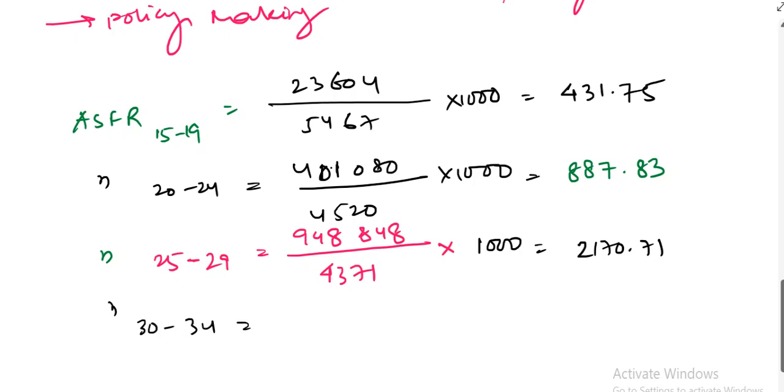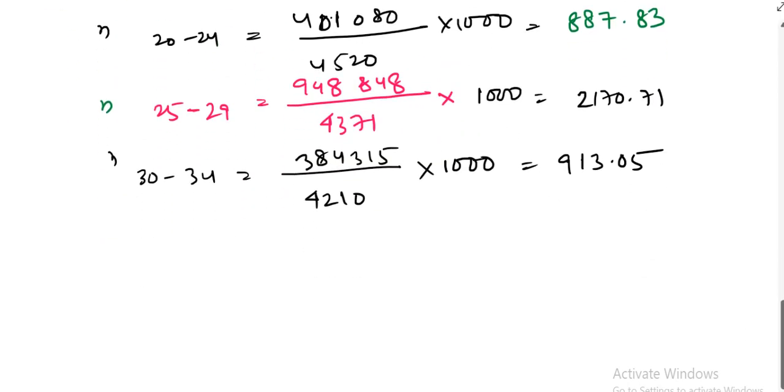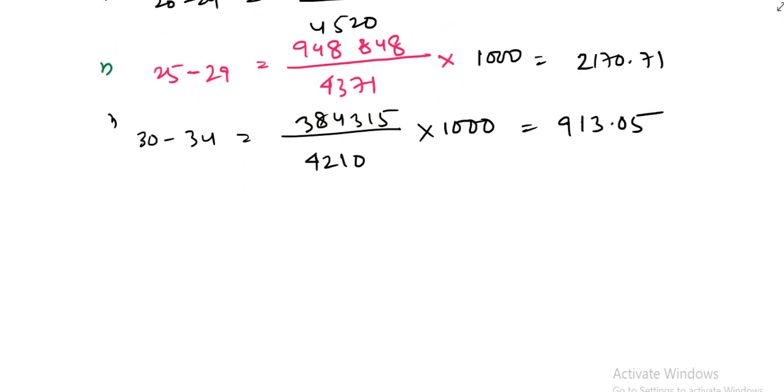ASFR 30 to 34, the result is 384,315 divided by 4,210 into 1,000, that means 913.05.